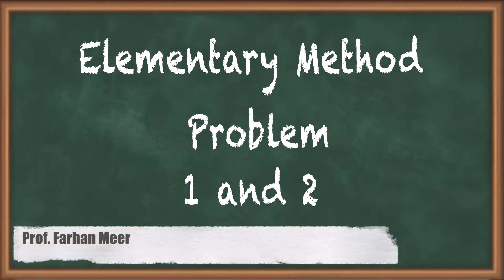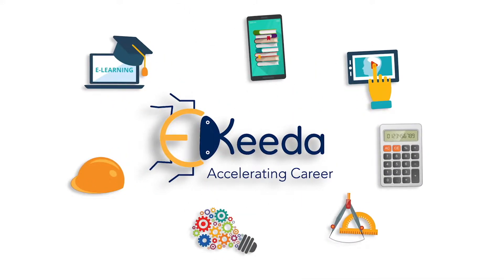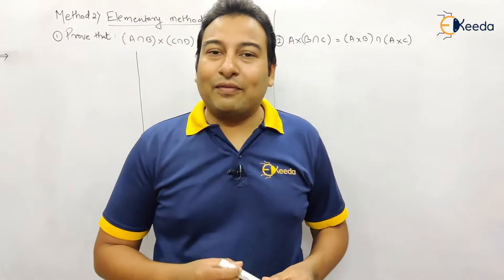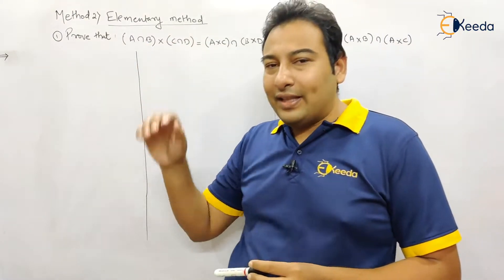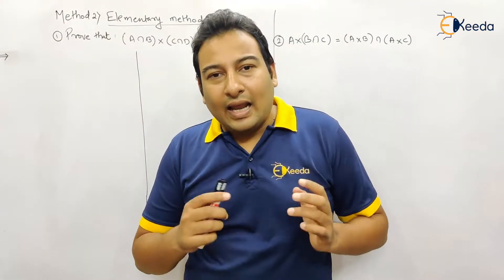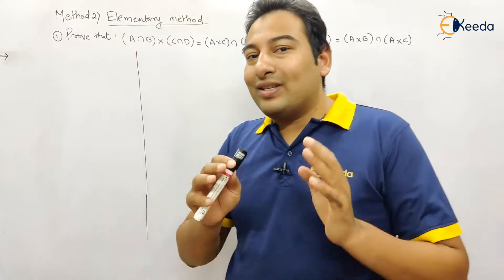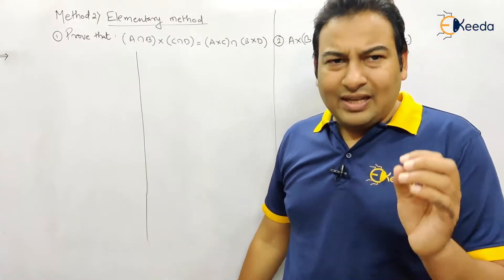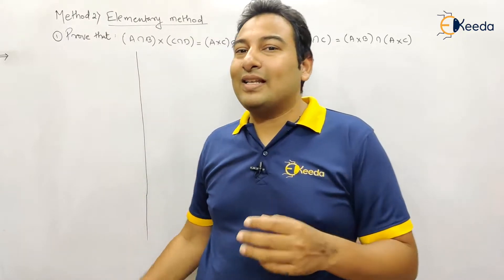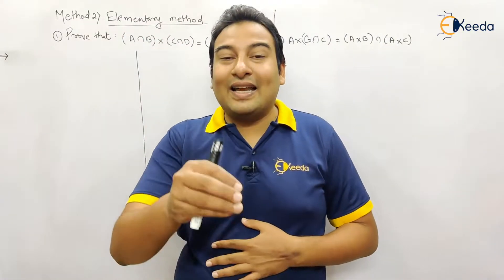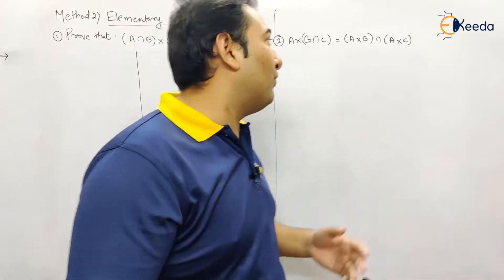In this video we'll be discussing method number two: the elementary method, for solving problems one and two. We'll discuss this method for solving equations. The last method we discussed was the Venn diagram. Now we're going to discuss method number two, the elementary method. There are a lot of problems that can be solved using both methods, but there are a few problems that can strictly be solved by elementary method only.